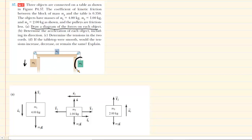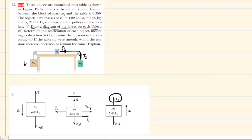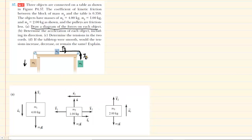Moving over to mass M3, we again have the gravitational force downward, labeled M3 times g, and an upward tension force. Note that this tension is labeled T2 — the same T2 connected to M2 — because they are connected by the same rope. So T2 is consistent across both the block on the table and M3.